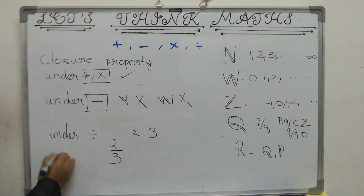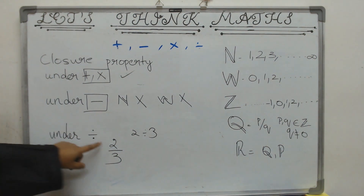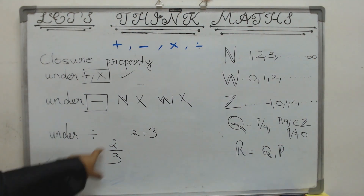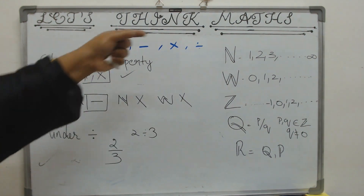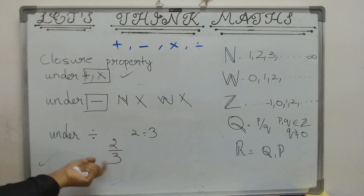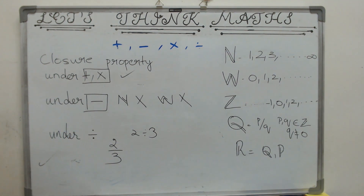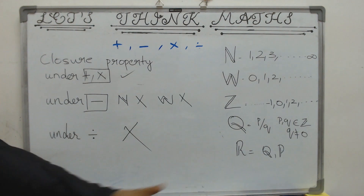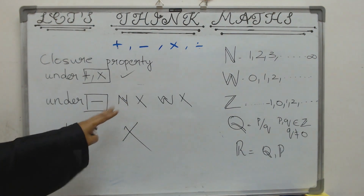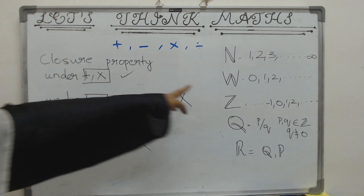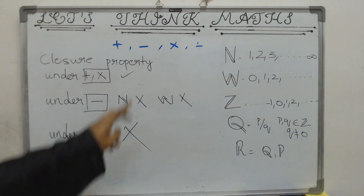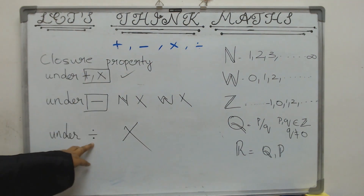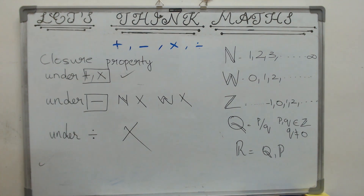2 divided by 3 gives a rational number. We took two natural numbers and divided them, but the answer goes down to the rational number system — it is not a natural number. So to summarize: under multiplication and addition, all five systems are closed. Under subtraction, only the last three — integers, rational numbers, and real numbers — follow the closure property; natural numbers and whole numbers do not. Under division, none of the five systems follow the closure property.